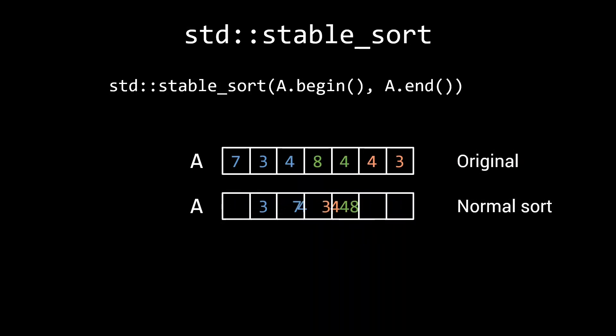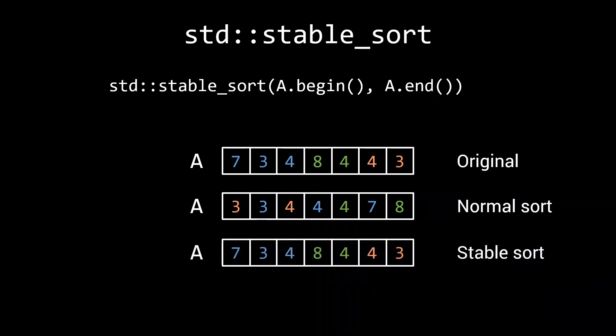If we execute a normal sort, we are only guaranteed that the elements are ordered in non-decreasing order afterwards. Note that the orange 3 was after the blue 3 in the original input, but now appears in front of it. Similarly, the order of the fours is all mixed up. The stable sort algorithm sorts while maintaining the relative order of equal elements. The fours are ordered blue, green, orange in both the original input as well as the stable sorted array.